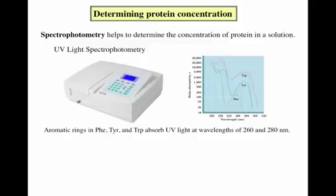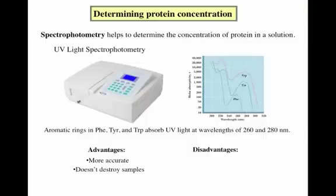Unlike a visible light spectrophotometer, a UV light spec directly measures the concentration of protein in a solution. This process has its advantages and disadvantages as well. It is more accurate than visible light spectrophotometry in that it is more sensitive. It also doesn't require that you destroy your samples, as you don't have to add any kind of reagent to them. It doesn't require any other reagents to perform the assay, so it is easier and faster.